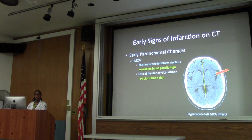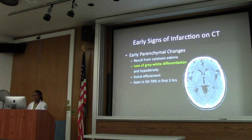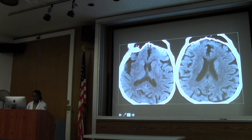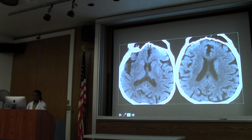That's one of the very early parenchymal signs of a stroke. How early? Like three to six hours, or even before that. Here's another example: a little bit of atrophy, normal side has nice white-grey matter distinction. On this side, there's a very subtle loss of that differentiation - that's an insular ribbon sign that you can see with stroke.